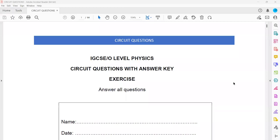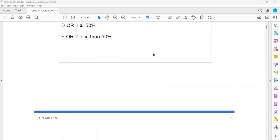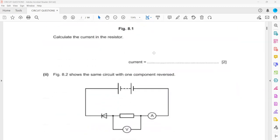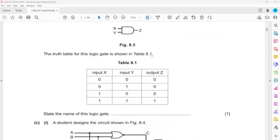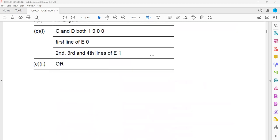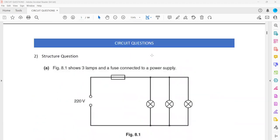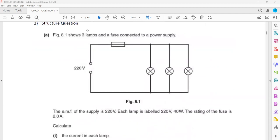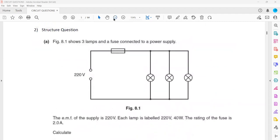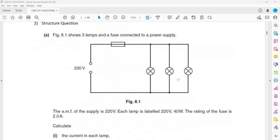This question is related to electricity, the electric circuits mainly. That is question one, now question two. And the answer key is also there. So figure 8.1 shows three lamps are connected and a fuse, three lamps and a fuse connected to a power supply. So there's a 220 volt supply, a fuse is there and three lamps are connected.